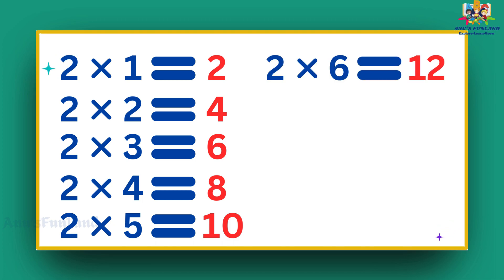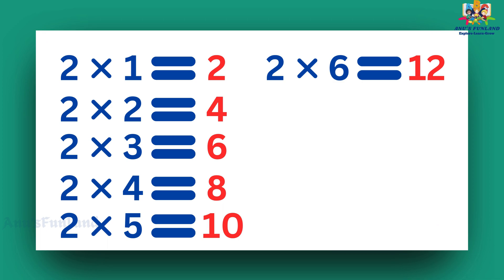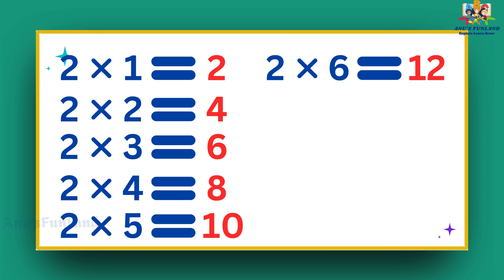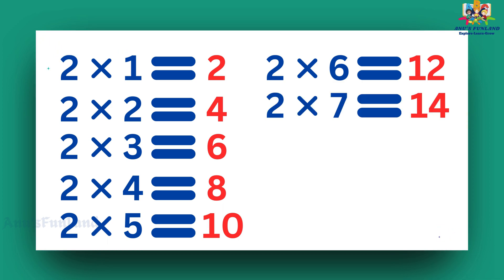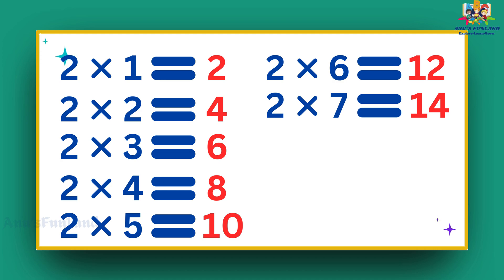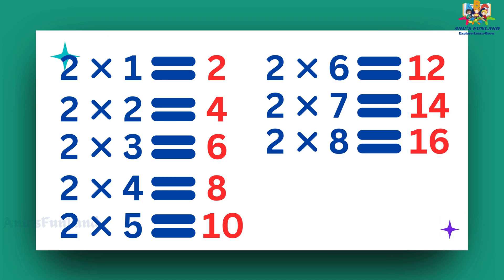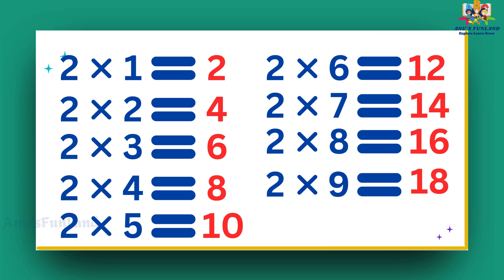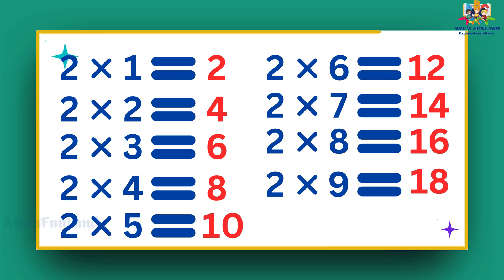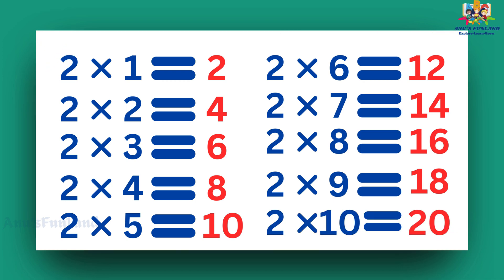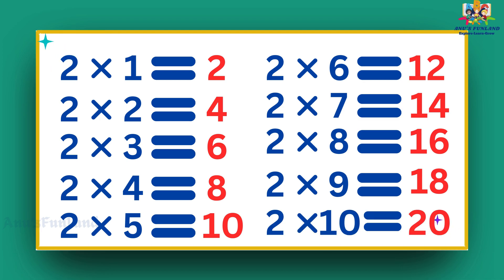Two sixes are twelve. Two sevens are fourteen. Two eights are sixteen. Two nines are eighteen. Two tens are twenty.